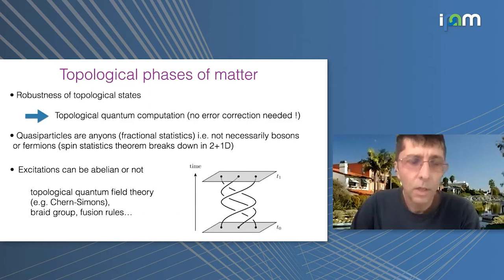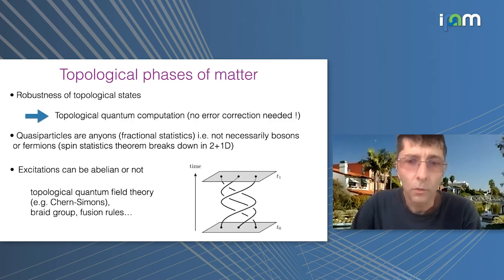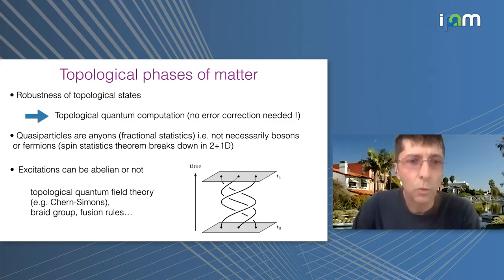Not only can they be anyons, but these anyons can be Abelian or non-Abelian. Here is a famous cartoon: if you just know the position of the quasi-particle it's not enough to know the state of the system — you need to know the history. So you have all these braiding and fusion rules, and we have useful mathematical tools such as topological quantum field theory.